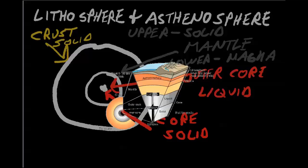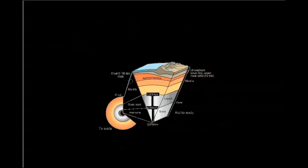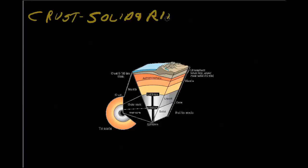Let's go on to the next one here. And here's another diagram of this. And we'll talk about some features of this. The crust, as we mentioned, is solid and rigid. So we talk about the crust, we're thinking of something solid and rigid. The upper mantle is also solid.